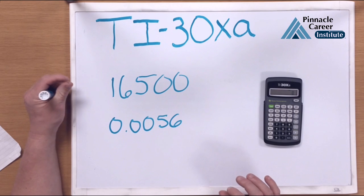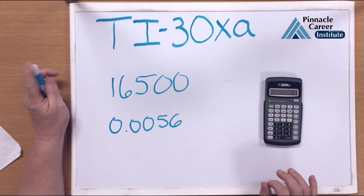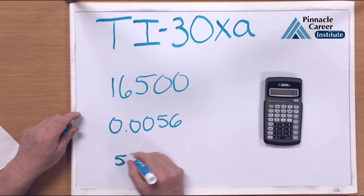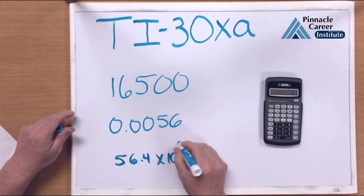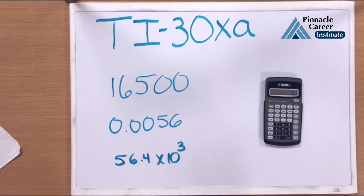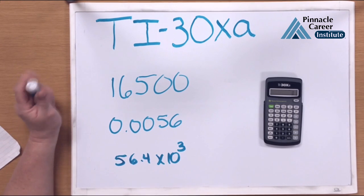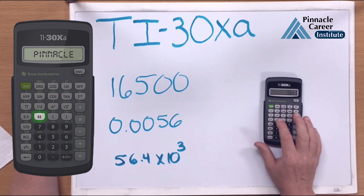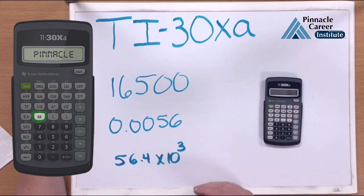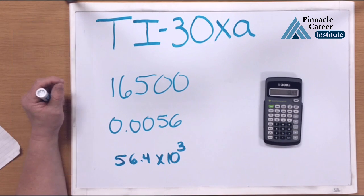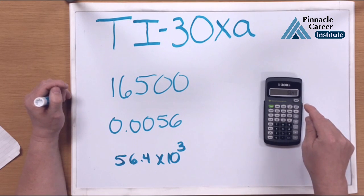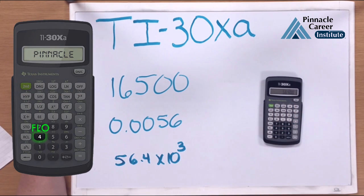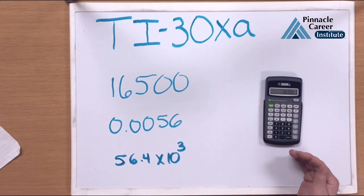The next thing you need to do with this calculator is use the E button to enter an engineering notation number directly. So let's say we're going to enter 56.4 times 10 to the third, which is 56,400. If they ask you to change this number into a regular number, you'd enter 56.4, then hit the little E button above the 7 — it sets up that times 10, and then you enter 3. Now I have 56.4 E03. From there, I can hit second and 4 to put it back into normal notation.